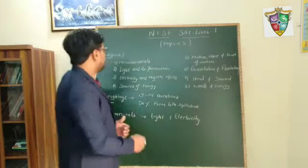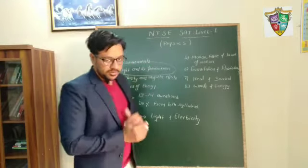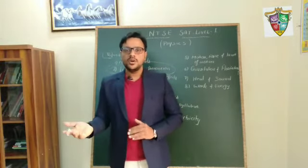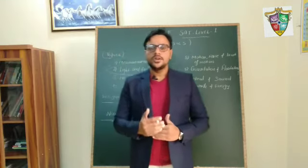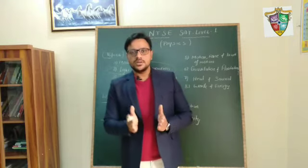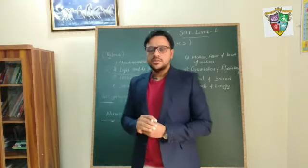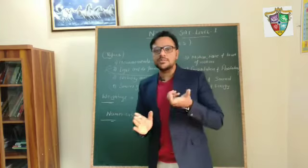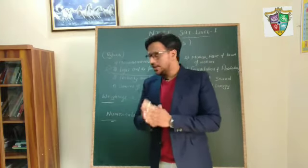Our first topic will be light and its phenomena. In this chapter, we will discuss what is light, what are the properties of light, and what phenomena light exhibits — such as reflection, refraction, dispersion, interference, and diffraction. Interference and diffraction are topics from class 12th and sometimes can be asked. We will discuss those topics briefly, but we will focus on the class 10th topics in detail.